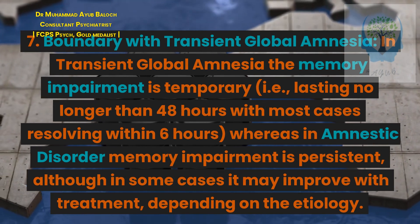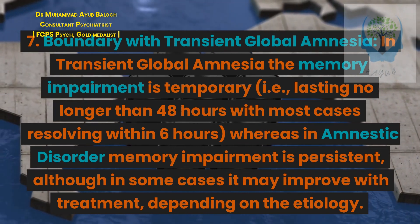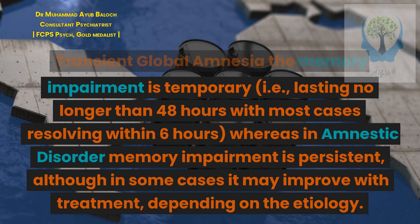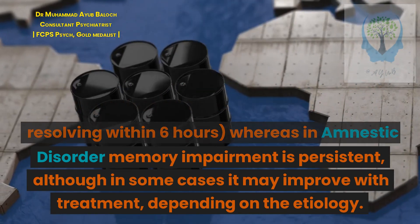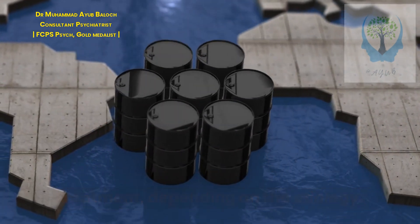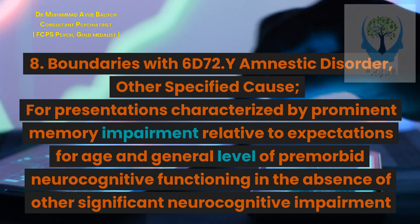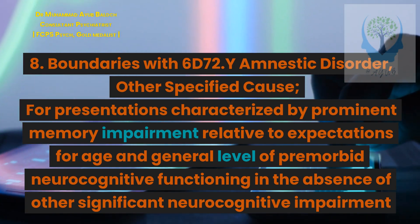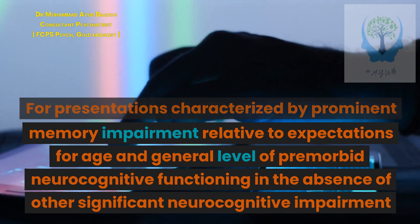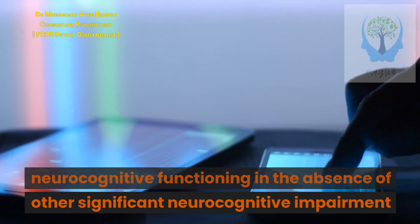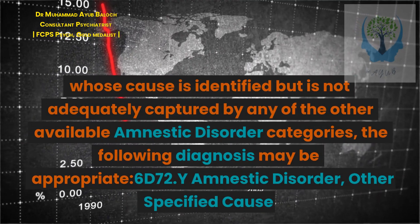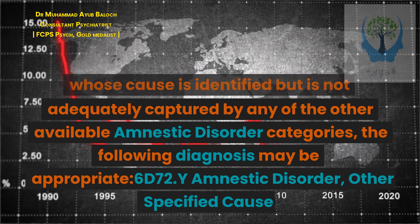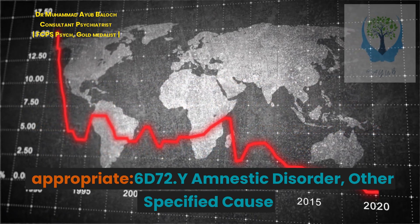7. Boundary with transient global amnesia: In transient global amnesia the memory impairment is temporary, i.e., lasting no longer than 48 hours with most cases resolving within 6 hours, whereas in amnestic disorder memory impairment is persistent, although in some cases it may improve with treatment, depending on the etiology. 8. Boundaries with 6072.Y amnestic disorder, other specified cause: for presentations characterized by prominent memory impairment in the absence of other significant neurocognitive impairment whose cause is identified but not adequately captured by other available categories, the diagnosis 6072.Y amnestic disorder, other specified cause may be appropriate.